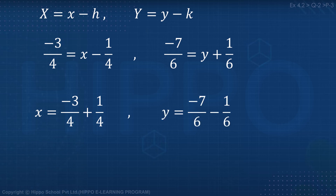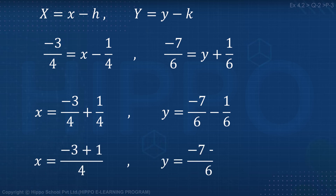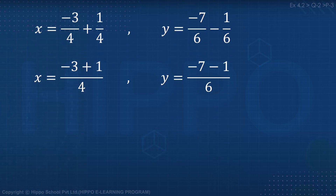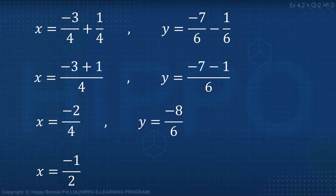Now solving for small x and small y: small x equals minus 3 by 4, minus 1 by 4 goes to the other side as plus 1 by 4. Small y equals minus 7 by 6 plus 1 by 6. Small x equals minus 2 by 4, and small y equals minus 8 by 6. Cancelling fractions: small x equals minus 1 by 2, and small y equals minus 4 by 3.